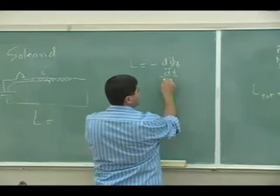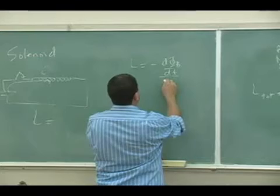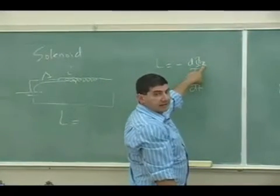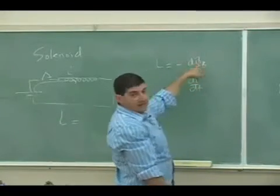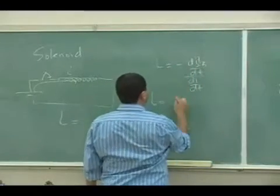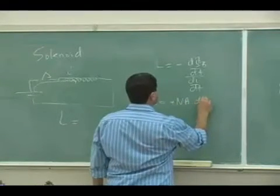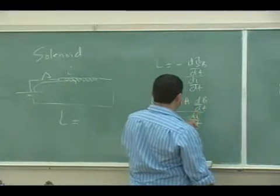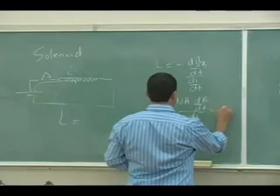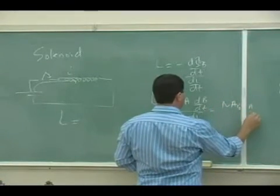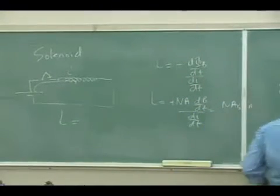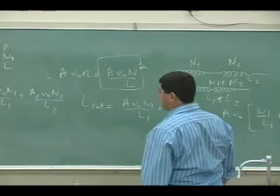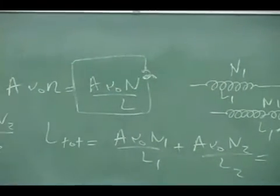There is something missing in that equation. When computing phi_B, I said B times A, but I forgot there are N number of loops, so it should be N times B times A. So it should be N times A, then d(B)/dt over di/dt. There was one more N missing. So with B equals mu-zero N i, it becomes N times A times mu-zero times N, and then the di/dt cancels. So the final result is N squared times A times mu-zero over L — the number of turns should be squared.